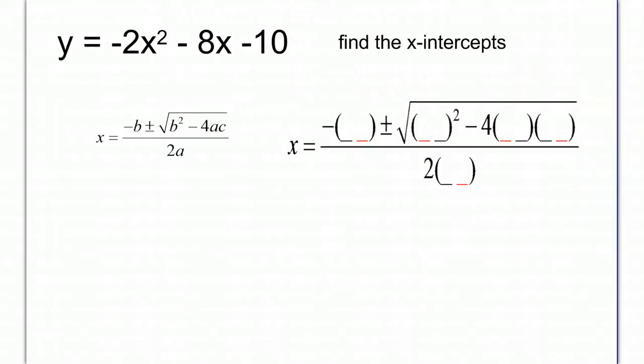Just a reminder what our values are. We have an a from our negative 2. We have a b from our negative 8. And then we have a c from our negative 10.